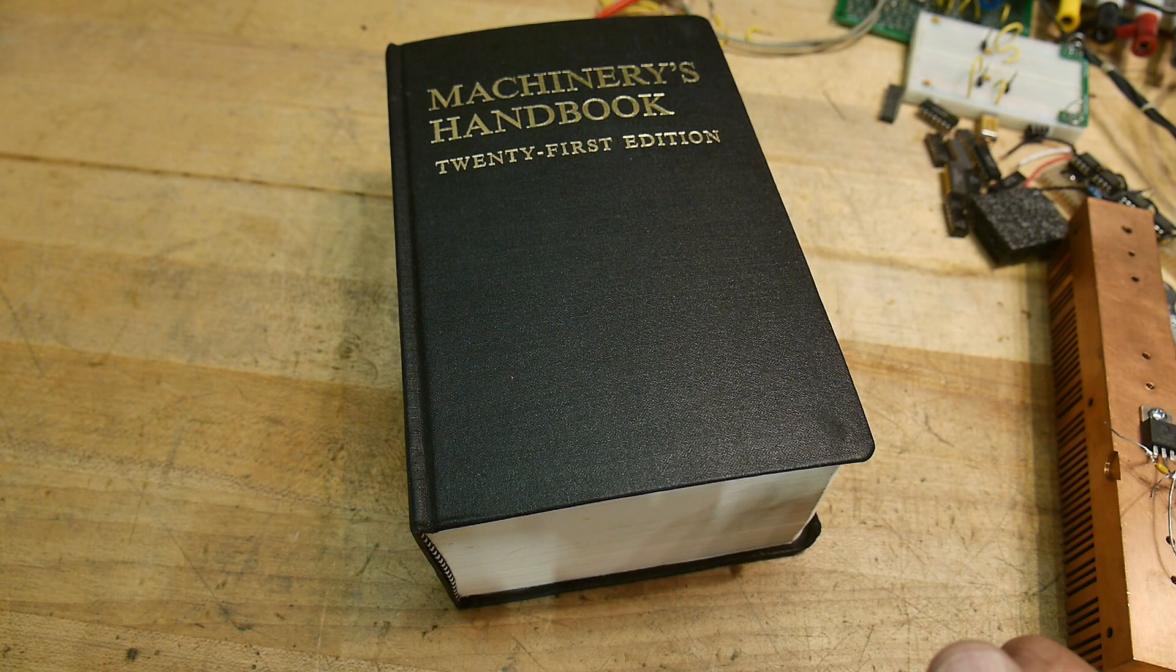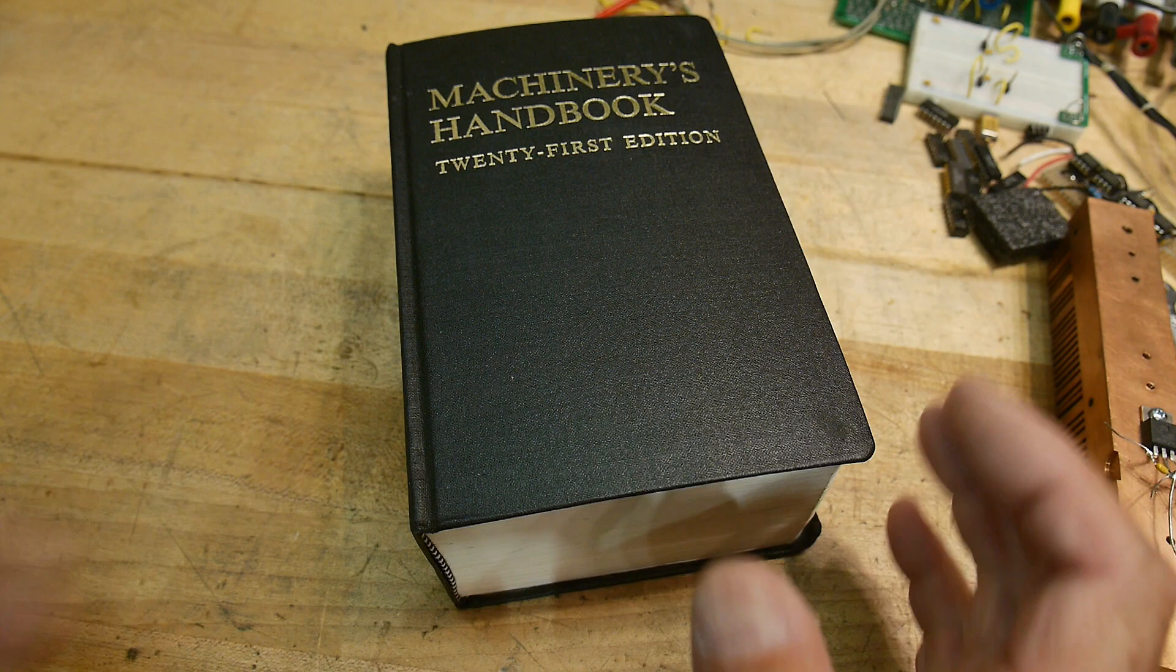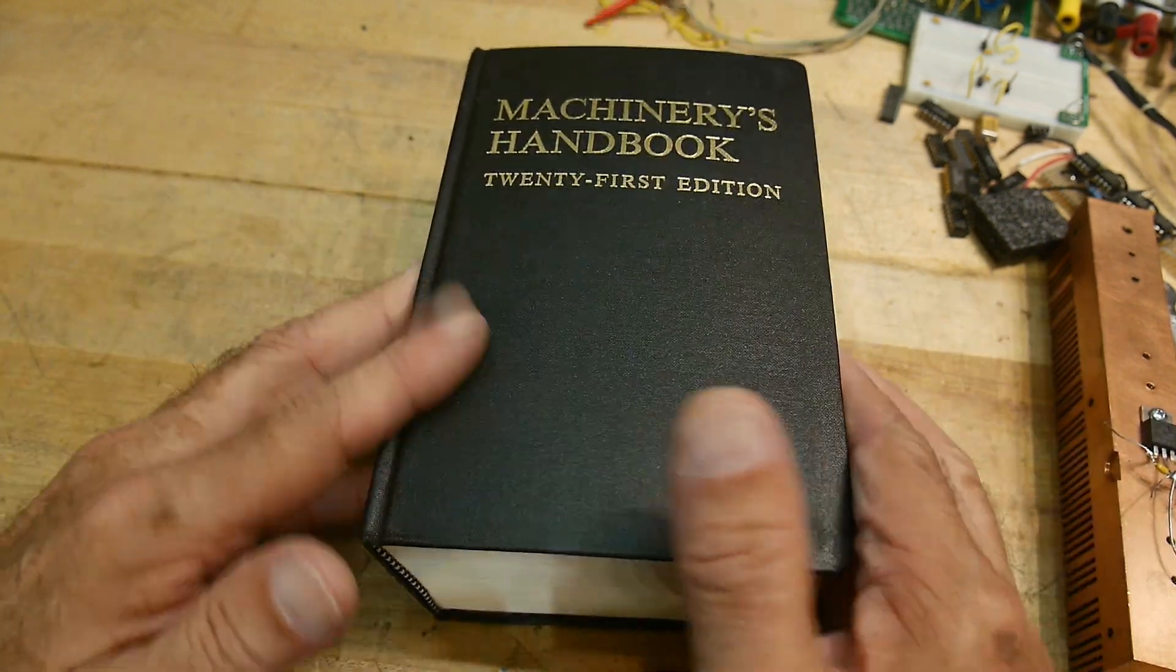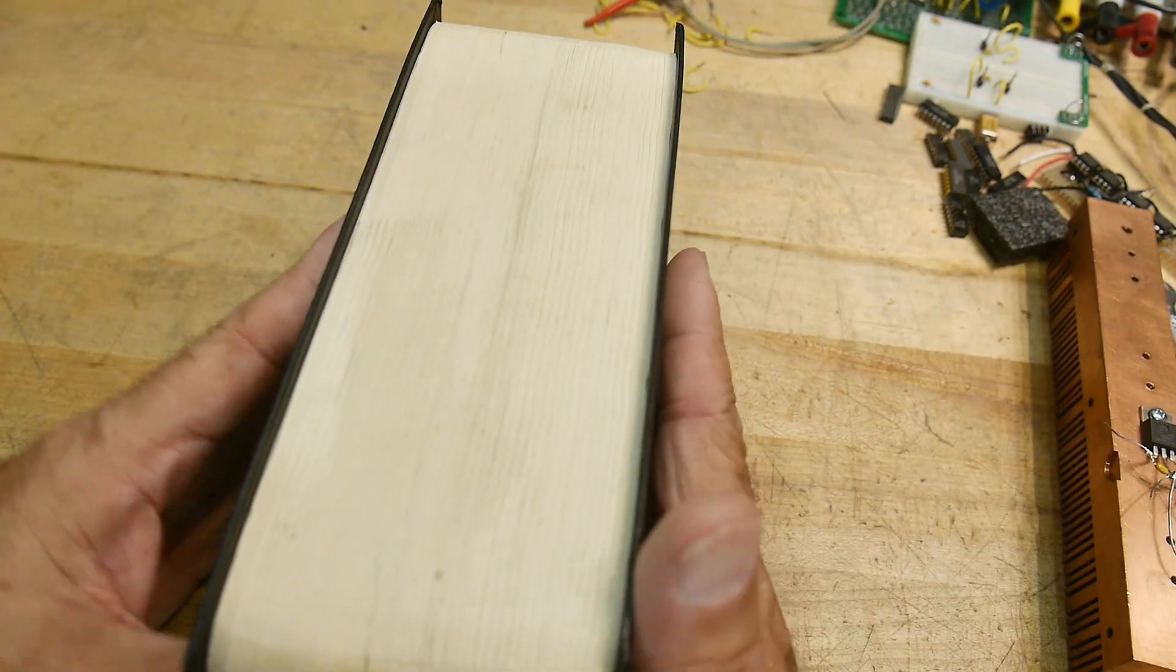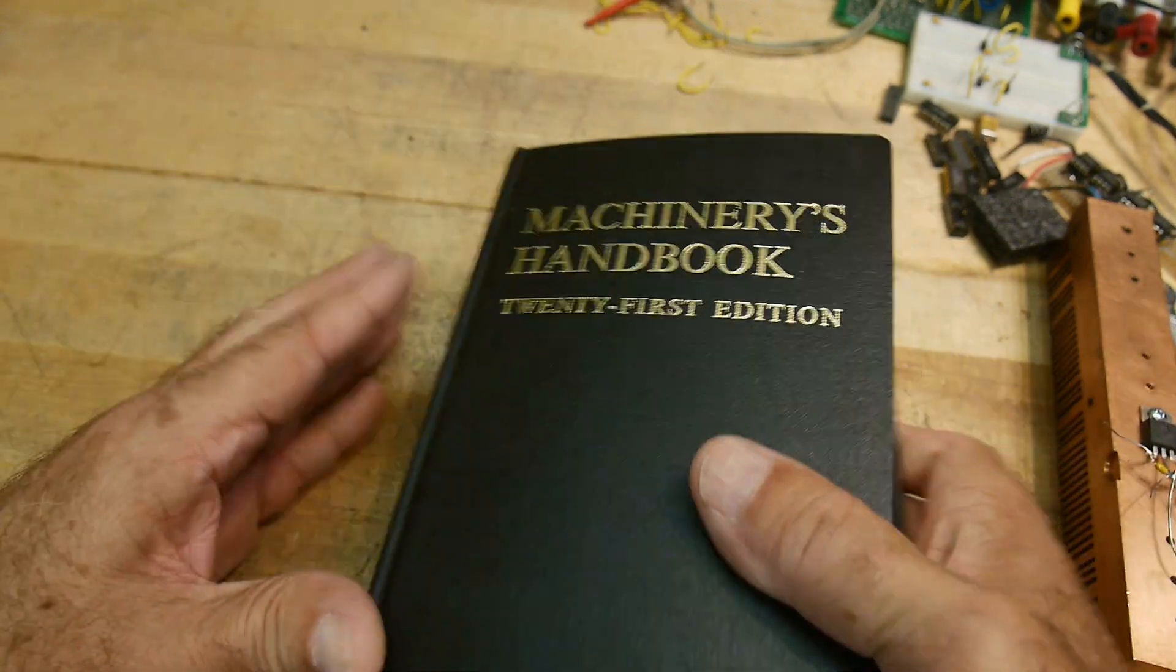Alright, if you do any machining, you might be interested in some numbers, and a lot of times you can go to the Machinery's Handbook. This is a big, giant book. It's got everything in it.